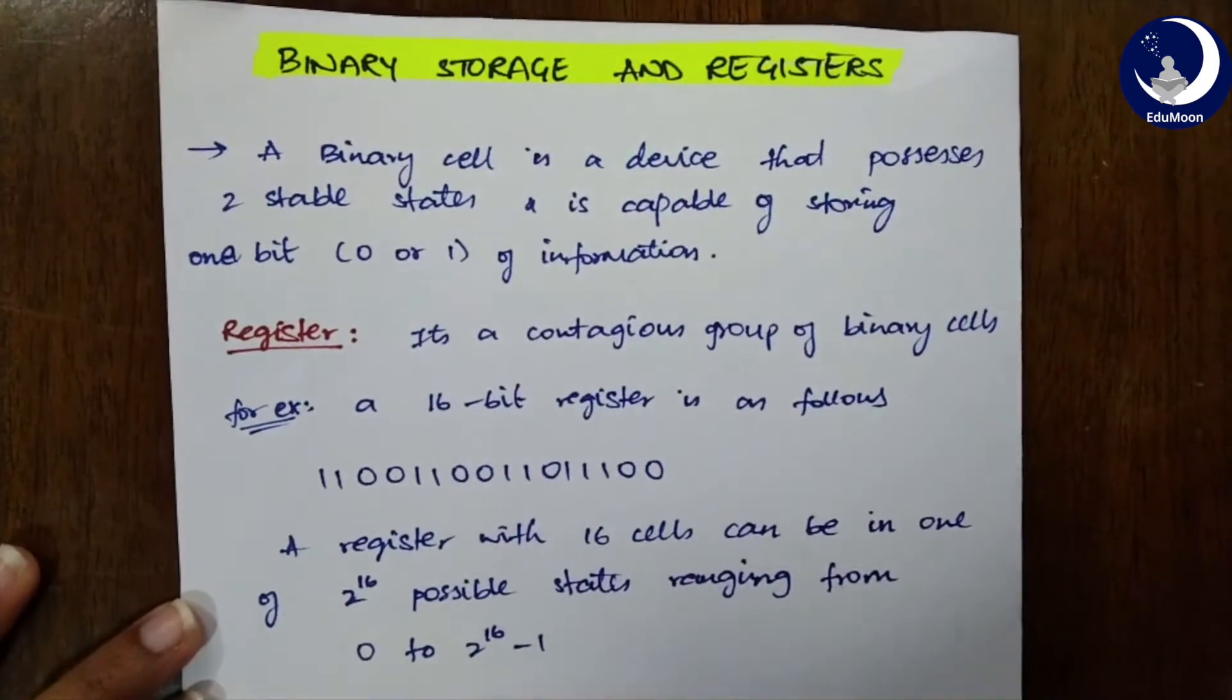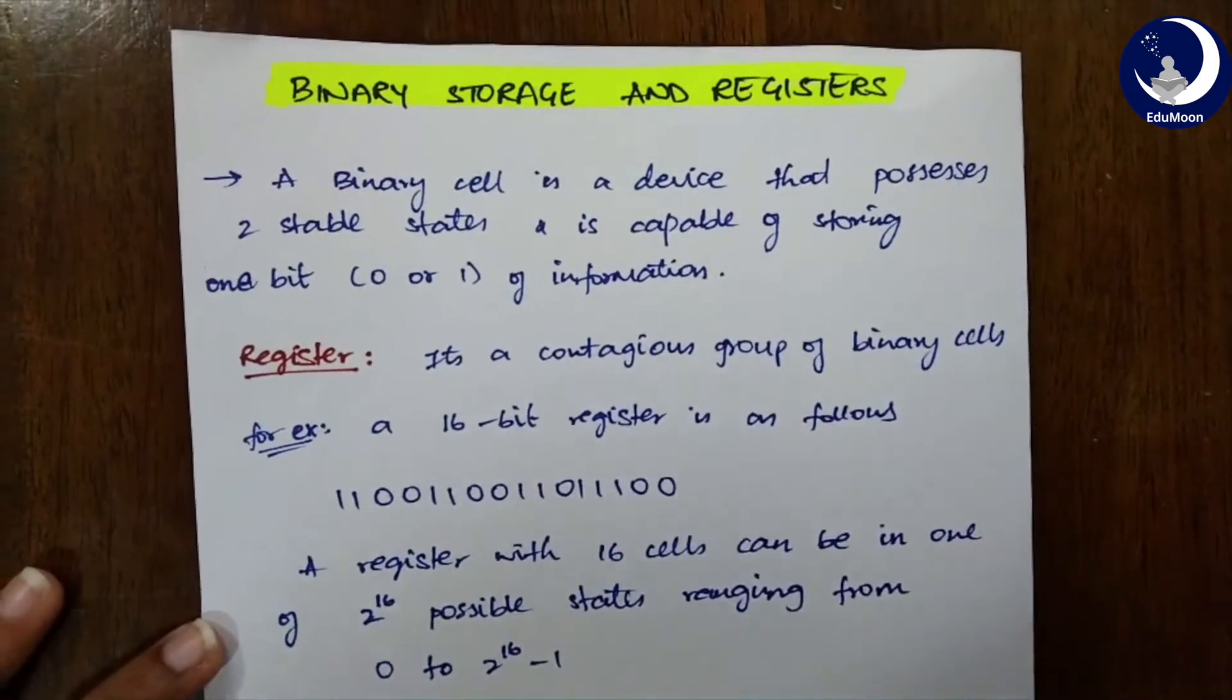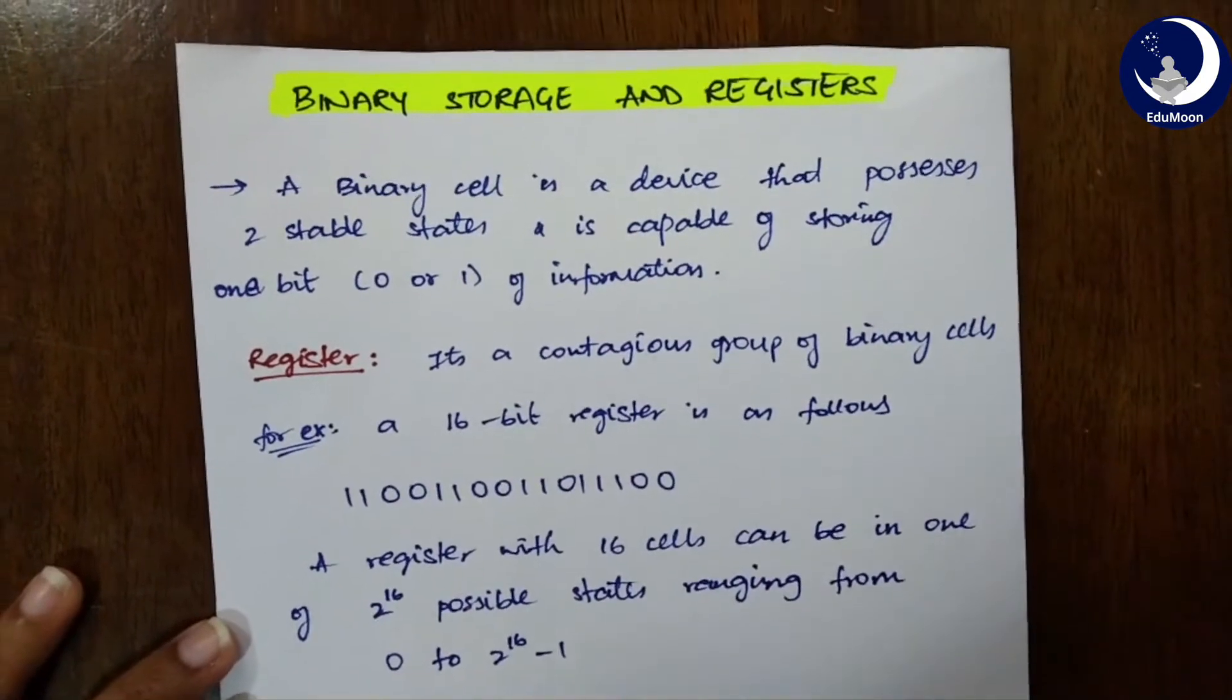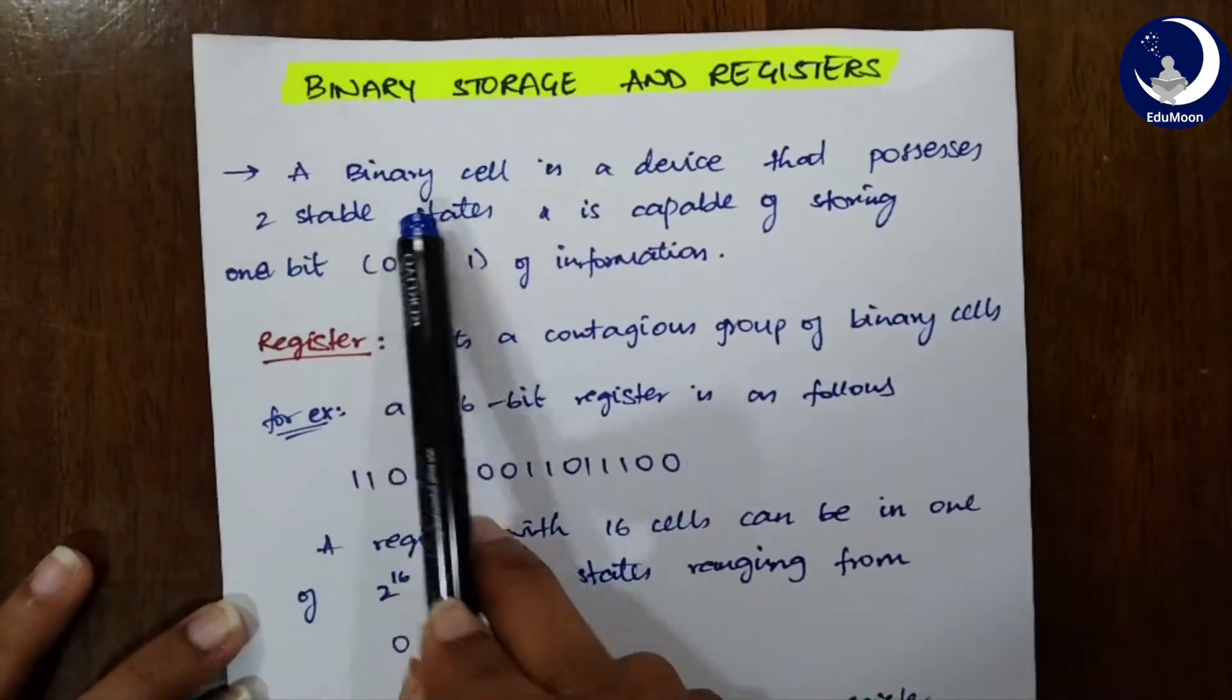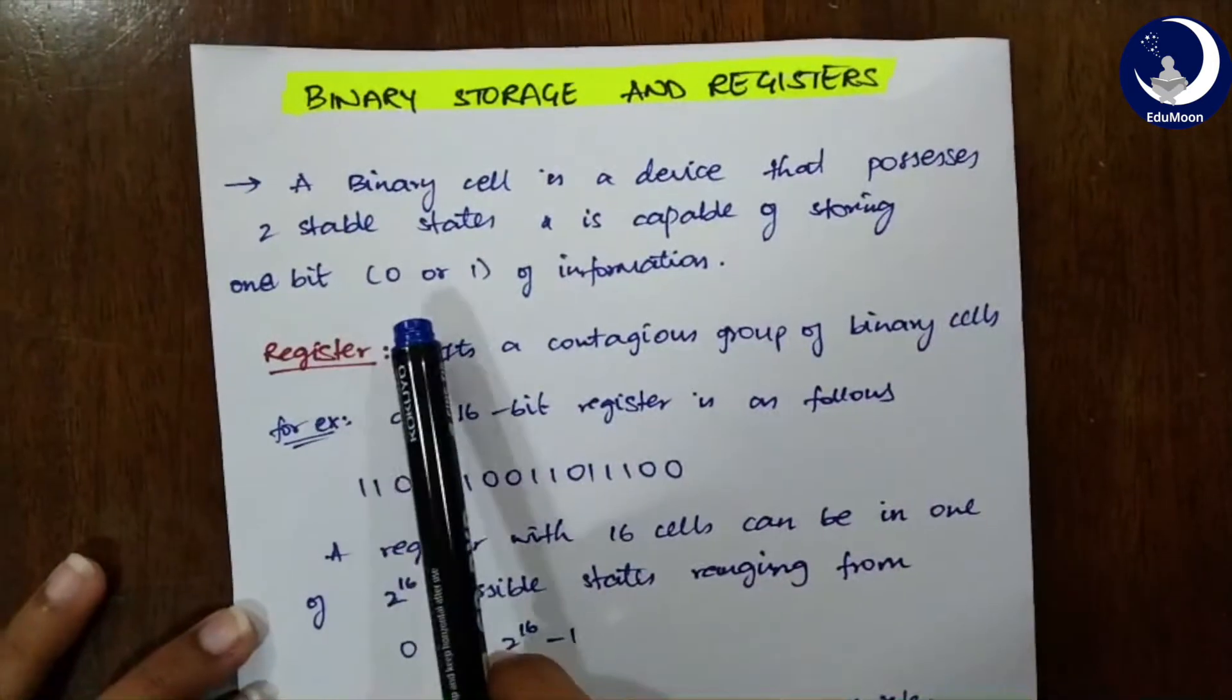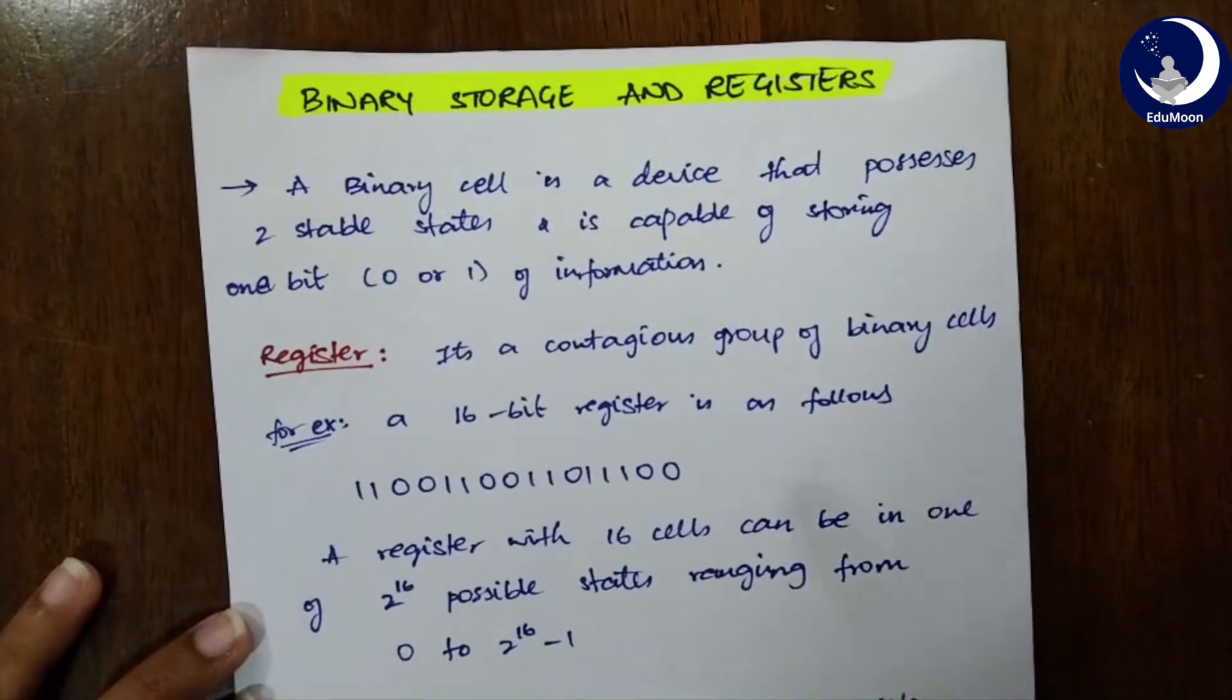Let's first discuss binary storage and registers. The binary information in a digital computer must have a physical existence in some medium for storing individual bits. These individual bits are stored in the form of binary cells. A binary cell is a device that possesses two stable states and is capable of storing one bit. It can be either a zero or a one depending upon the value we give them.